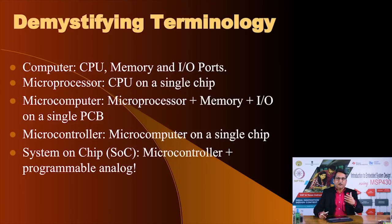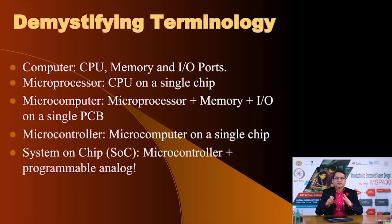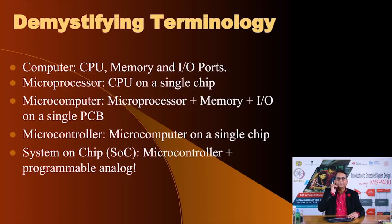With a System on Chip, you could program an analog building block to function as an amplifier with a specific gain, or as an inverting, non-inverting, or differential amplifier, or as a filter — low pass, band pass, high pass, band reject, or notch — with a chosen cutoff frequency. Integrating the microcontroller and programmable analog components on a single chip reduces the eventual system to a single integrated circuit, which is a great improvement.